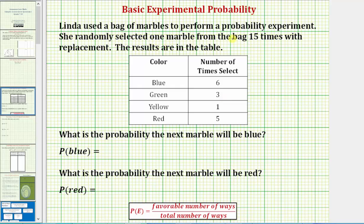Linda used a bag of marbles to perform a probability experiment. She randomly selected one marble from the bag fifteen times with replacement. This means she selected one marble, recorded the color, put that marble back, and selected again, repeating this process fifteen times. The results are in the table.